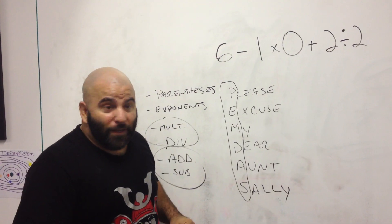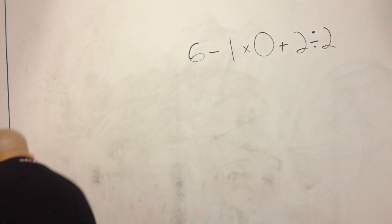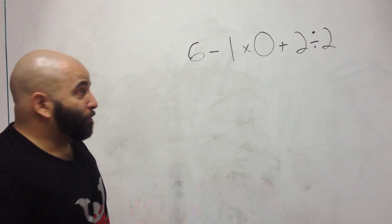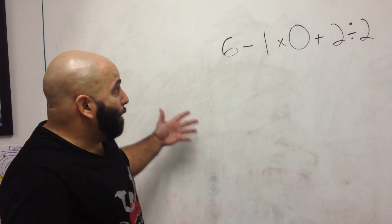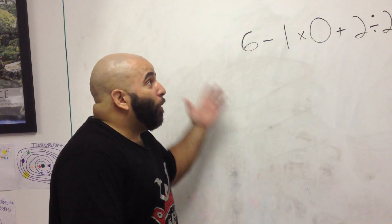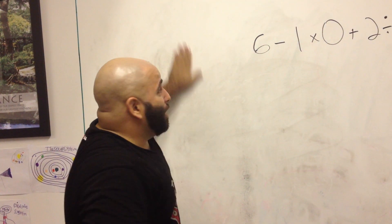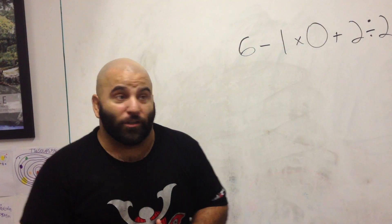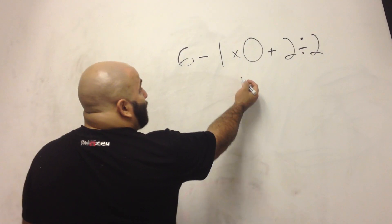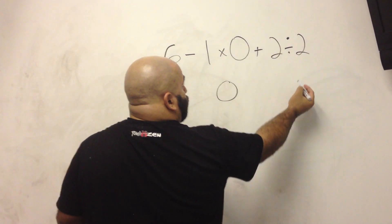Now let's apply it to this problem. 6 minus 1 times 0 plus 2 divided by 2. Sticking with those bubbles, we know the first thing we have to do is parentheses — there are no parentheses here. The next thing is exponents — there are no exponents, things like 1 to the second power. None of that. So the next thing we have is multiplication and division. It just so happens we have a multiplication example and a division example here, so those are going to be done first. 1 times 0 is 0. 2 divided by 2 is 1.